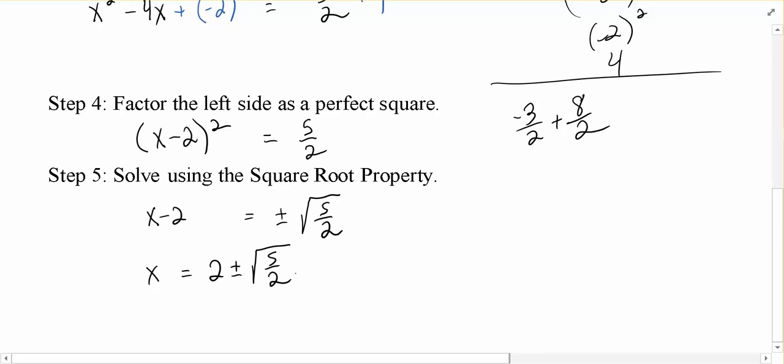But guess what? I'm not going to allow you to leave your answer like that. Because we have a square root of a fraction, we learned last unit that we need to rationalize denominators. So we can't have the square root of 2 in the bottom, and so instead we need to rationalize by multiplying by √2/√2.